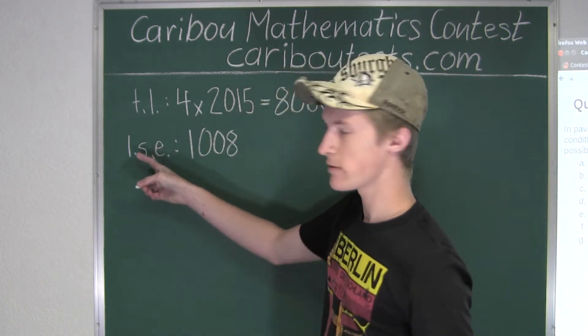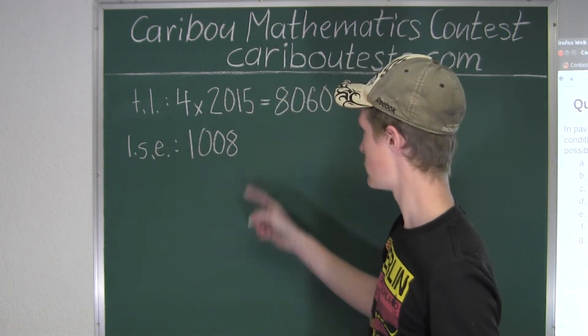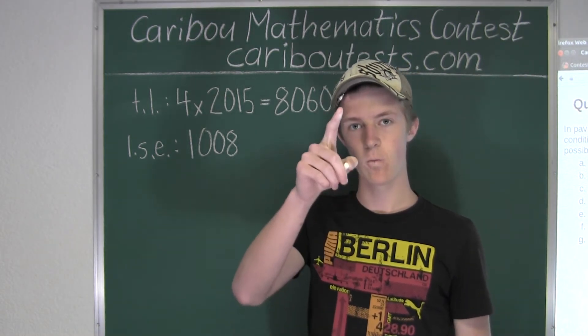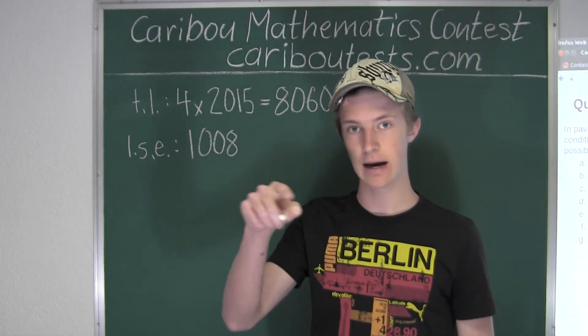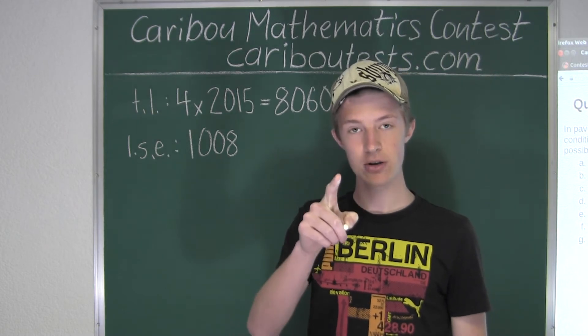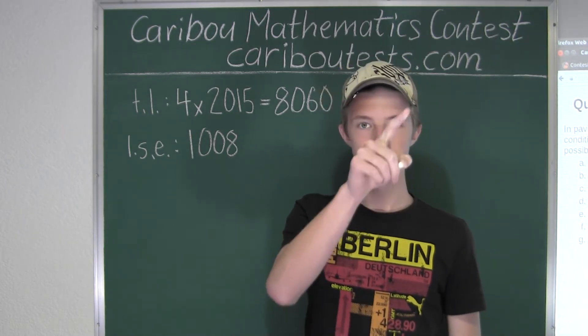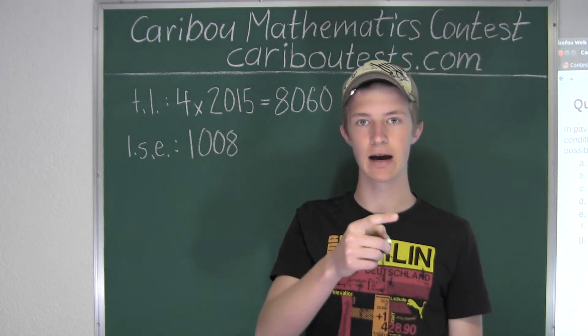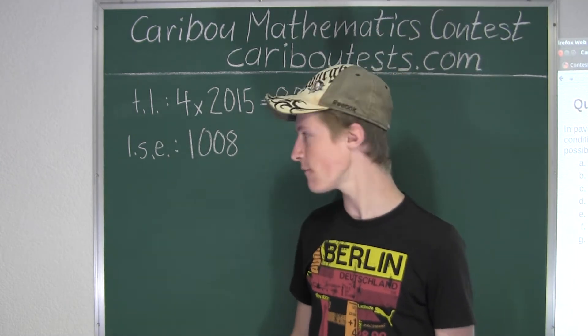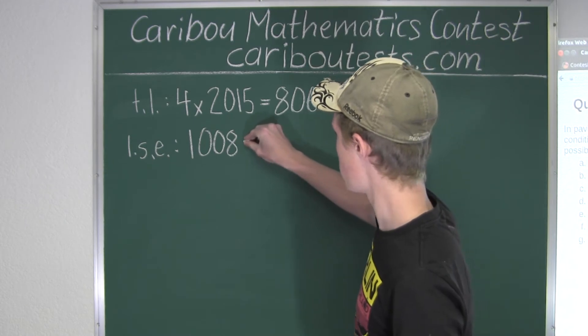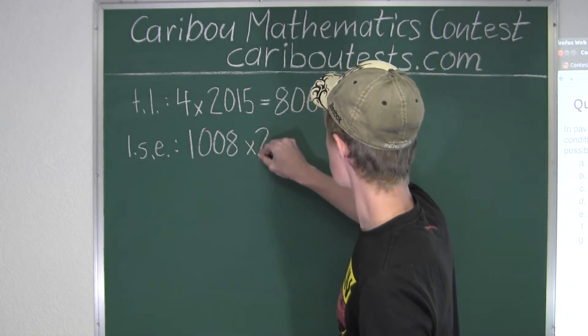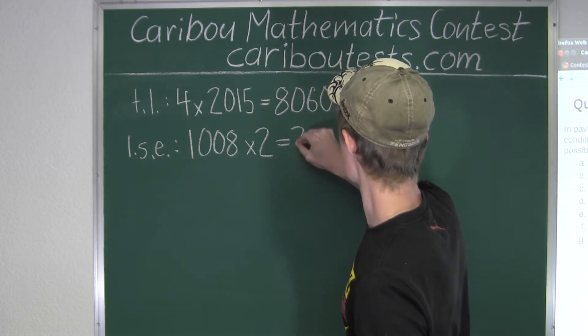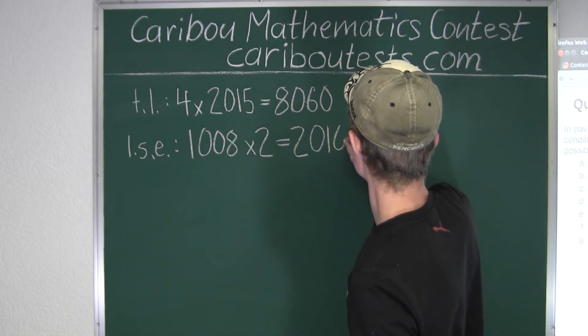But of course, we want to find the total length of those shared edges. Now, for one shared edge, it takes away one length for one side of a tile, but it also takes away a length of the neighboring tile, one length for that one side of the tile which is next to that. So therefore, we would have to multiply by 2 for the total length. So we have 1008 times 2, which is equal to 2016.